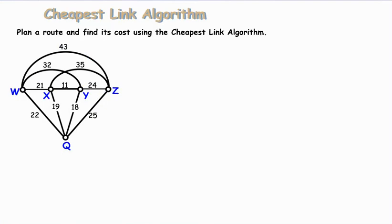All right, so here's our next example. We see that this is a K5 graph. We have five vertices where every vertex is connected to each of the others. And once again, we're using the cheapest link algorithm. So we look through the graph and find the cheapest number. That is 11. So we start by drawing X to Y with an 11 on it. And then we scan the graph looking for the next cheapest. We find that is 18 from Y to Q.